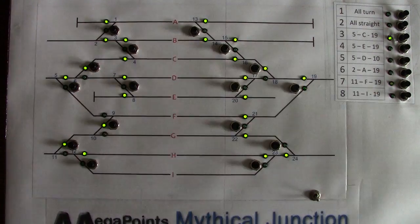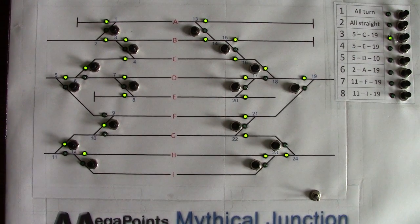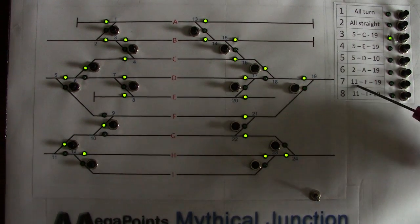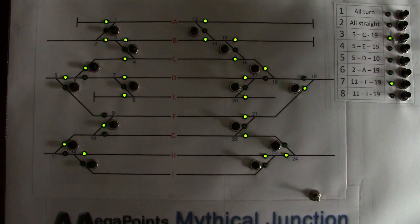What makes this different is that we have active route monitoring. So if I set route seven, eleven via F to nineteen again, I break this route silently because I'm operating from the routing panel.